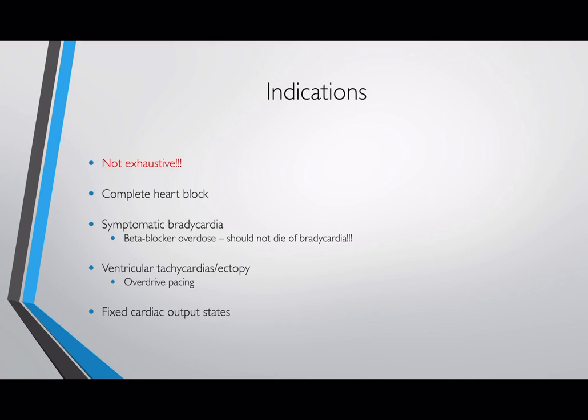Occasionally we put in pacing wires to overdrive pace someone. This is where some patients — especially those with ischaemic heart disease or myocarditis — develop malignant ventricular ectopics, and by speeding up the heart rate you can prevent enough time for those ventricular ectopics to form.